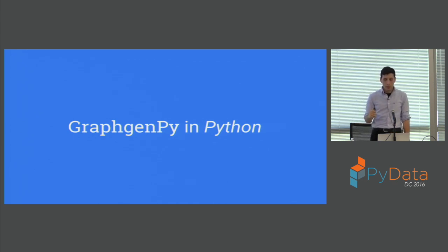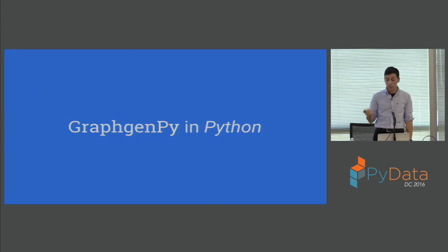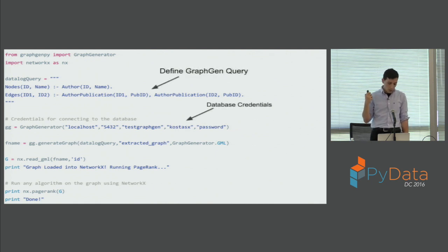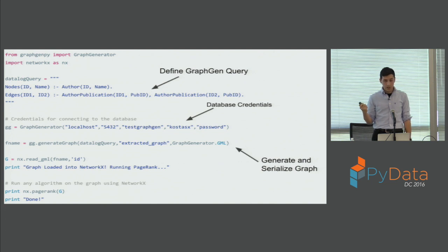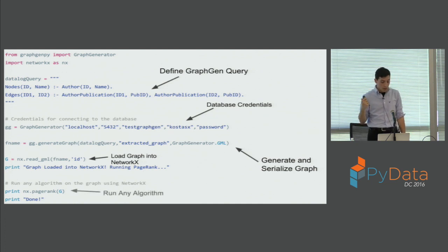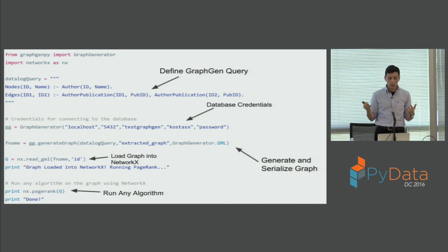GraphGenPy is a library built over the system for usage in Python. It's very simple: define your query in our language, define the database credentials to connect, generate and serialize the graph by calling the generate_graph method with the format you want, load the graph into NetworkX or graph-tool or any other library, and then run an algorithm on it. With six lines of code, you can extract a graph and run PageRank on it. I think this is very powerful.